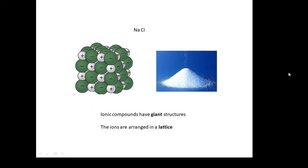Ionic compounds have giant structures. You get millions and millions of these positive and negative ions all stuck together when it's a solid, and you get a regular structure, a lattice. They're in rows and columns and layers.